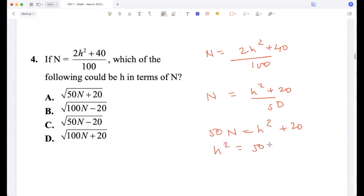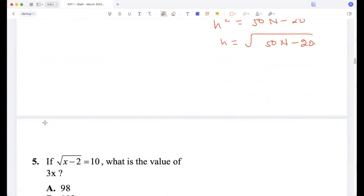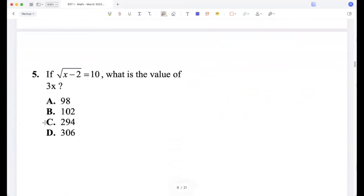If √(x - 2) is 10, what is 3x? √(x - 2) is 10, so x minus 2 is 100, so x is 102.